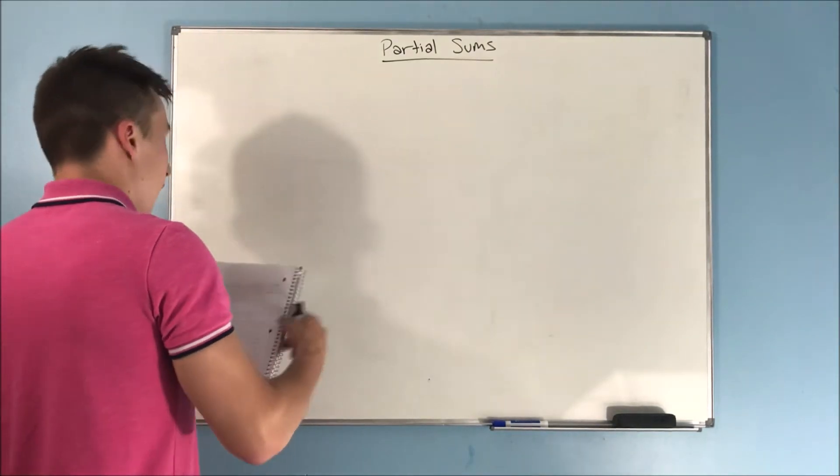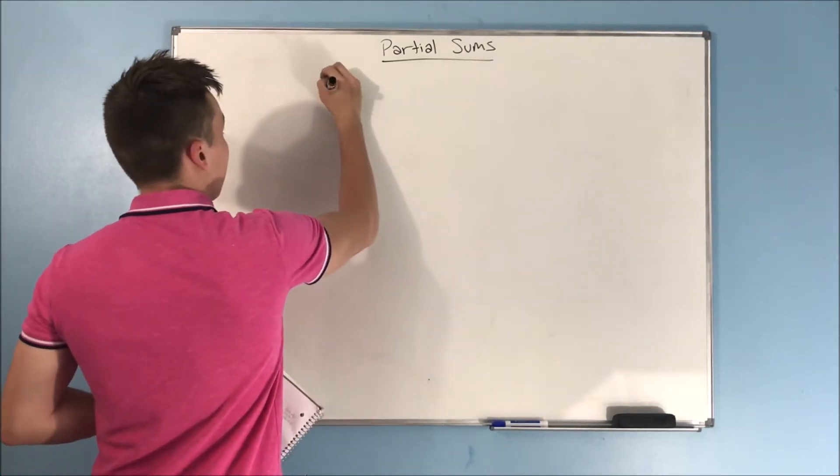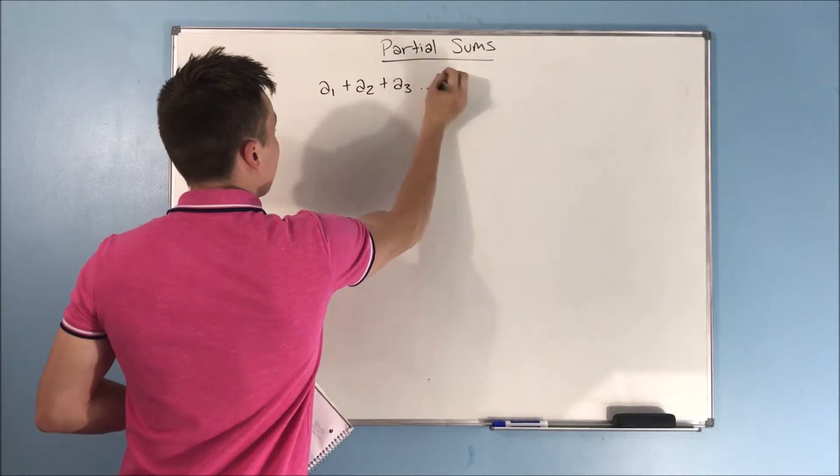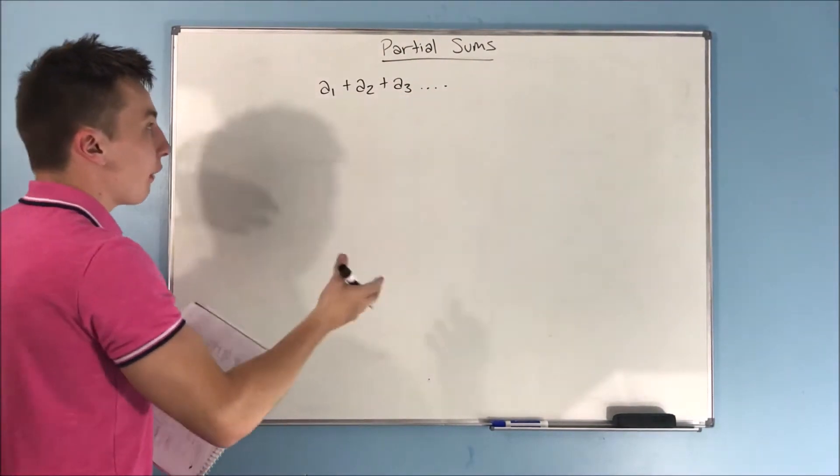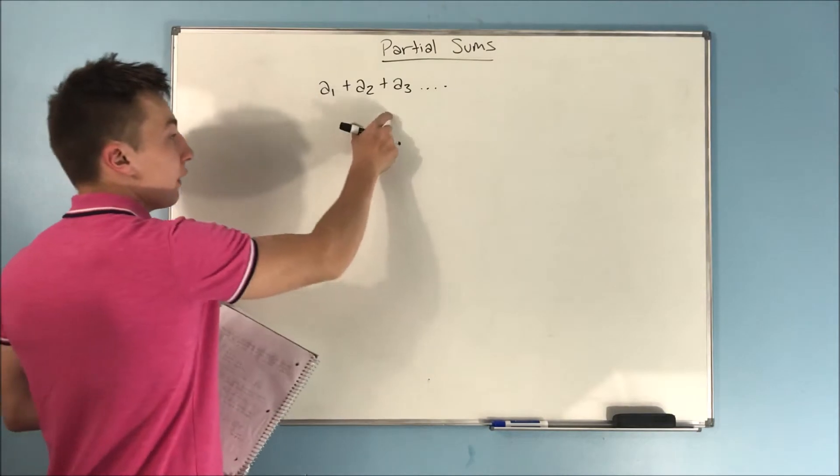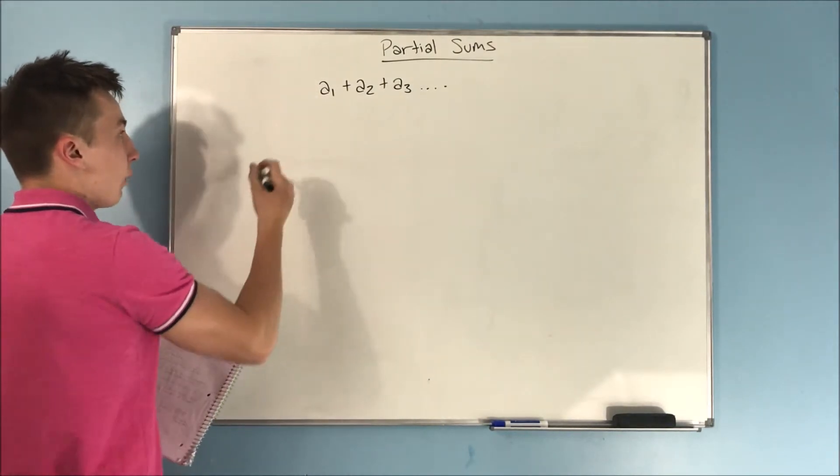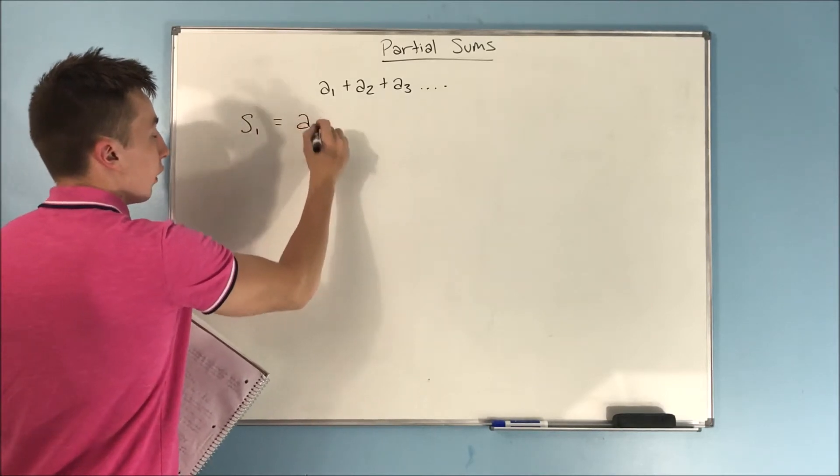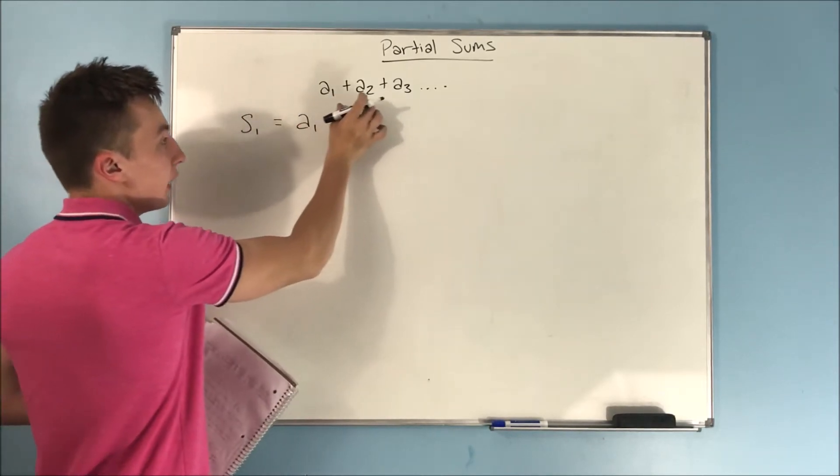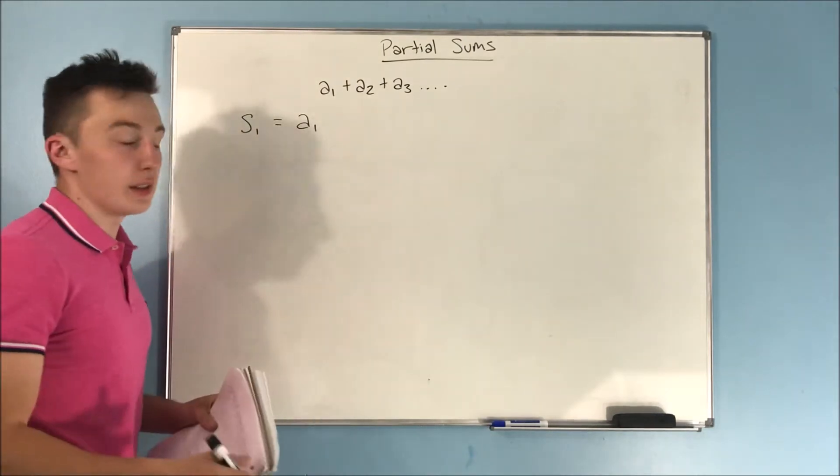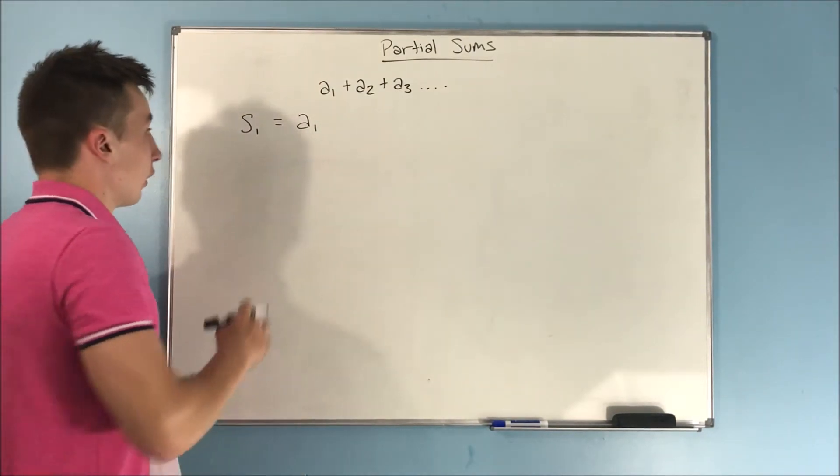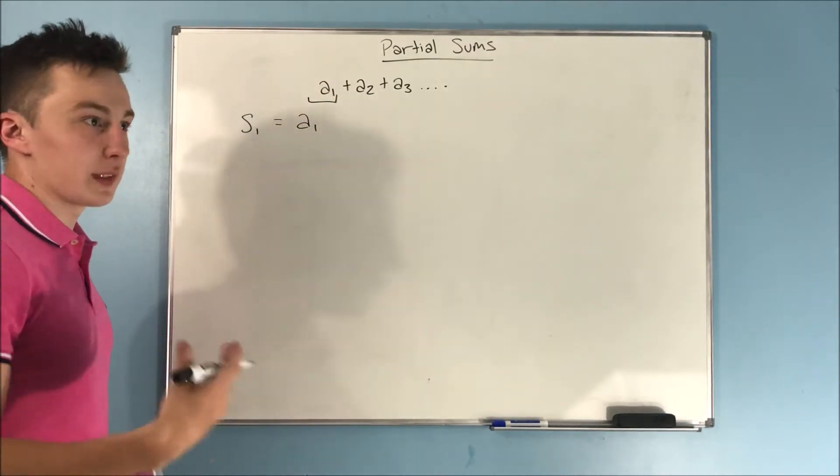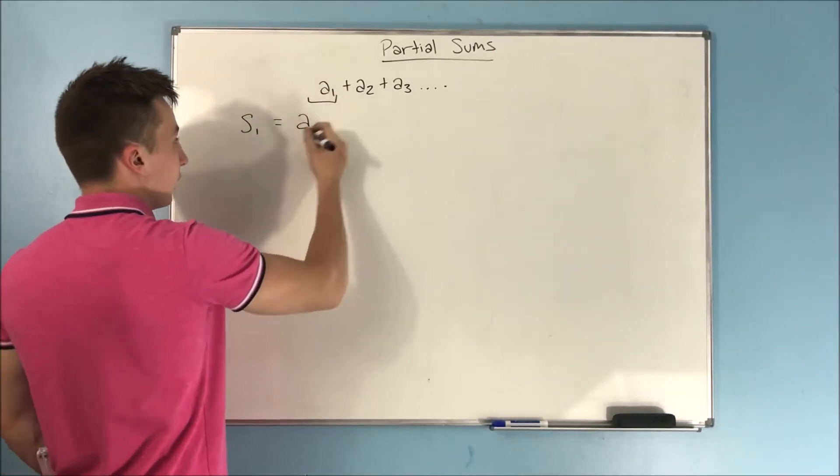So if we had a series, a sub one plus a sub two plus a sub three, and so on and so forth, we can find partial sums for this series. And what that means is that we have the sum up to a particular point in that series. So for our first partial sum here, it's only for this piece, which really isn't much of a sum, but it's the first term in the series.